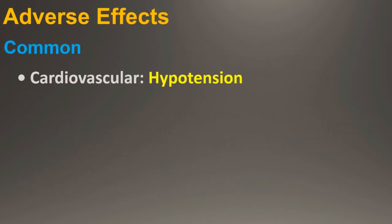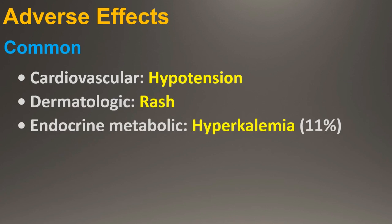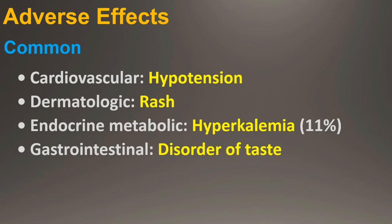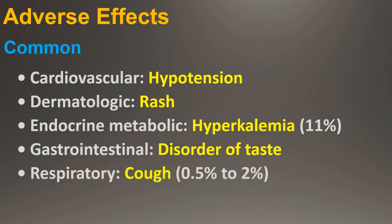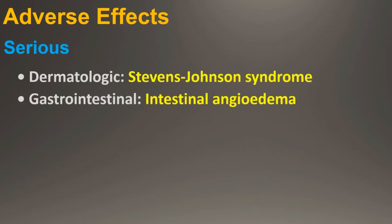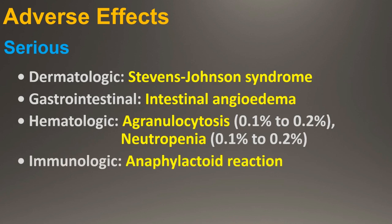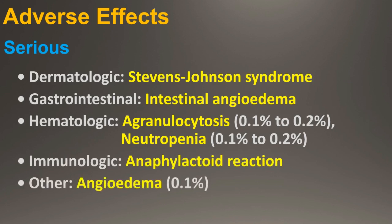Adverse effects — Common: cardiovascular: hypotension; dermatologic: rash; endocrine/metabolic: hyperkalemia (11%); gastrointestinal: disorder of taste; respiratory: cough (0.5% to 2%). Serious adverse effects: dermatologic: Stevens-Johnson syndrome; gastrointestinal: intestinal angioedema; hematologic: agranulocytosis (0.1% to 0.2%), neutropenia (0.1% to 0.2%); immunologic: anaphylactoid reaction; other: angioedema (0.1%).